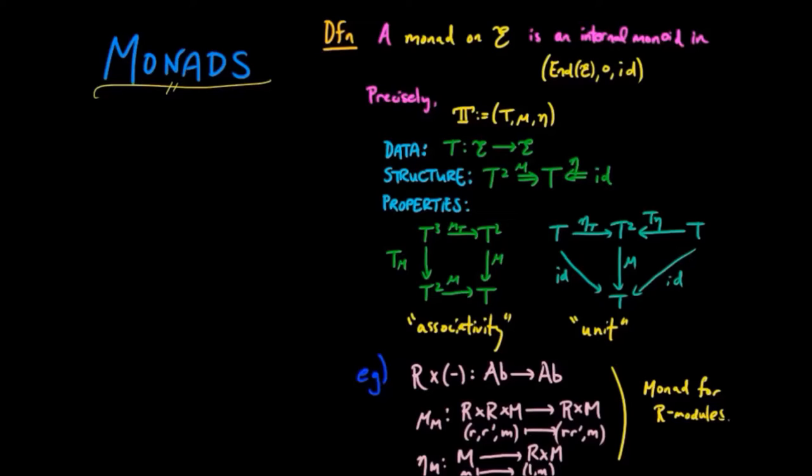Since adjoint situations are ubiquitous throughout mathematics, we'll find that monads are also ubiquitous. And that's because every adjoint situation induces a monad. And that's what this result states. Every adjoint situation where F is the left adjoint and U is the right adjoint from a category A to E yields a monad on E.